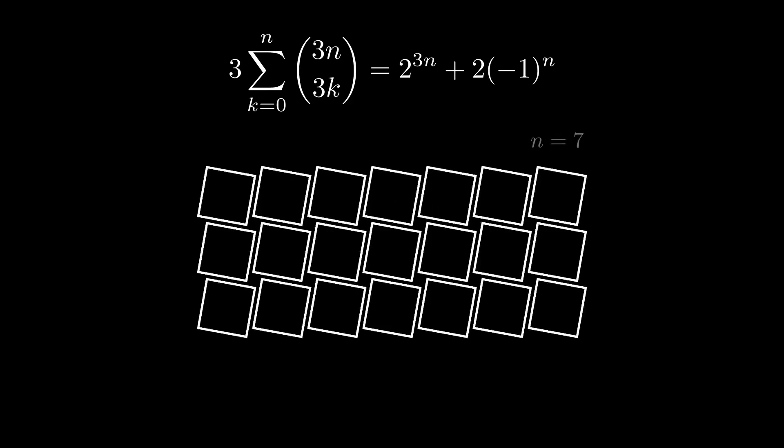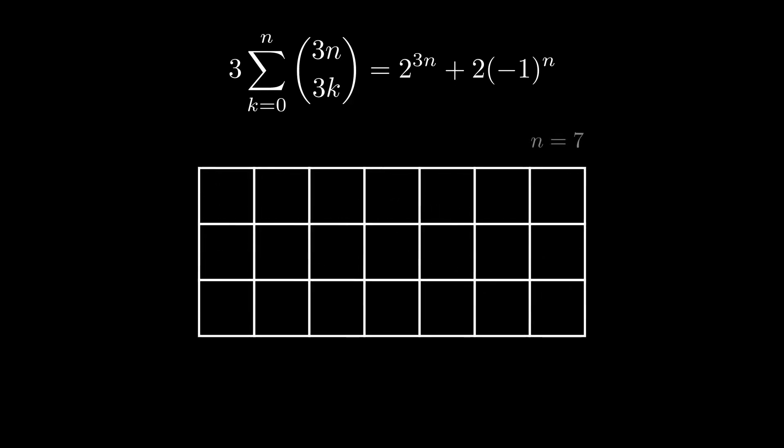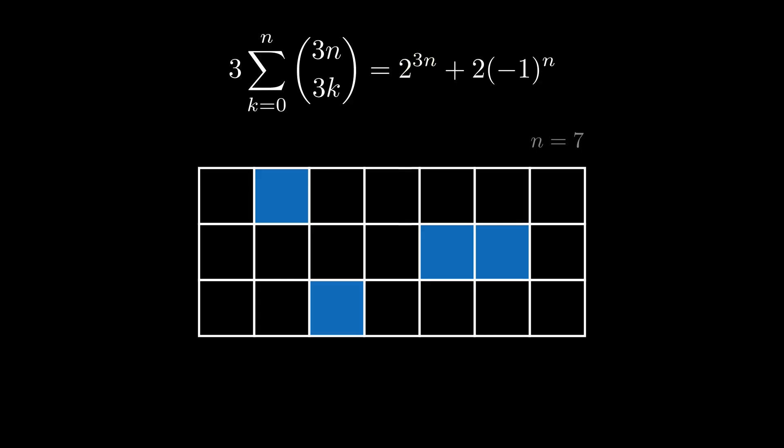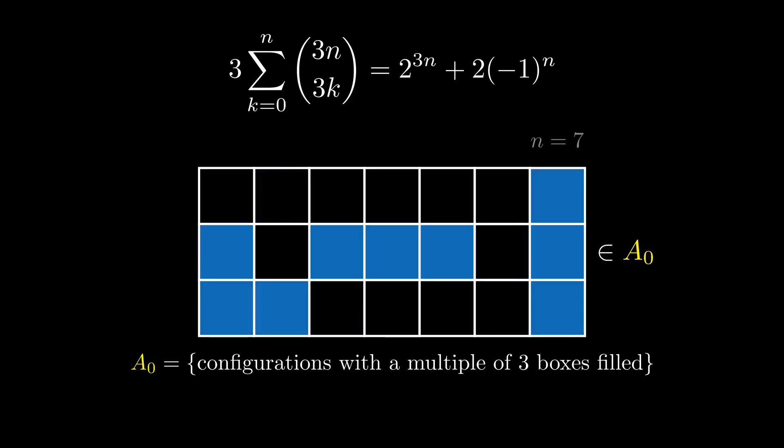Say we have a 3×n strip of boxes and we shade in any number of those boxes. The number of such configurations is all of the 2 to the 3n, as we've already said. Set A0 consists of the configurations with a multiple of three boxes filled. This filling's not in it. That one would be.